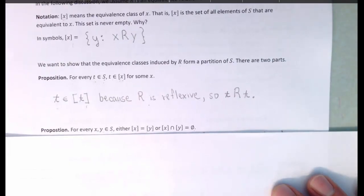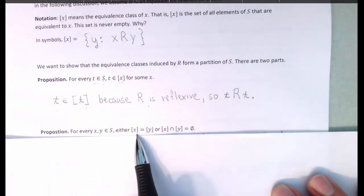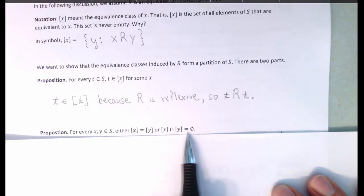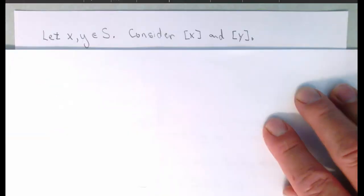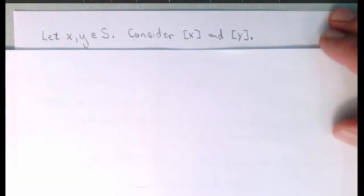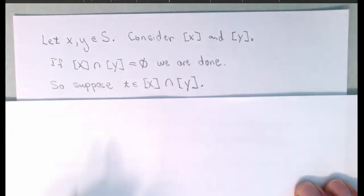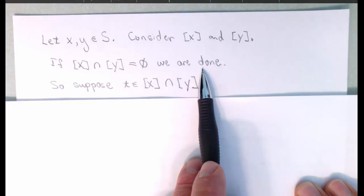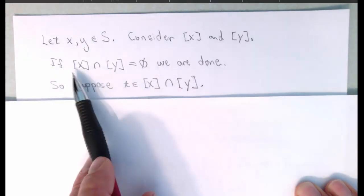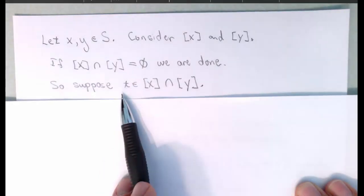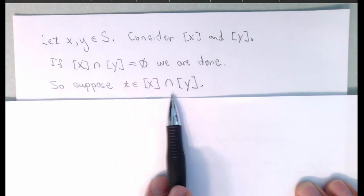Next, we want to show that the set of equivalence classes is a partitioning of the set S. The form we'll be working with is this: either two equivalence classes are equal or they are non-intersecting. So let X and Y be elements of the set, and we'll consider the corresponding equivalence classes. If X and Y have an empty intersection, then we don't need to consider them any further — that's what we want to show. Either two equivalence classes don't overlap or they're equal. So let's suppose that there is some element in the intersection of X and Y.